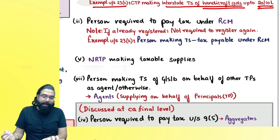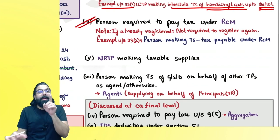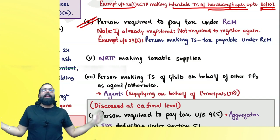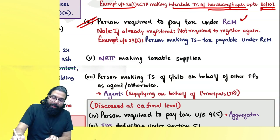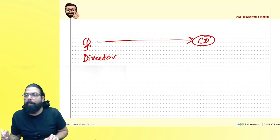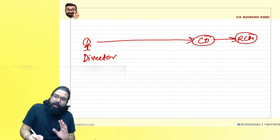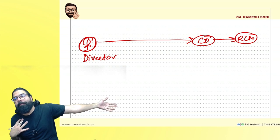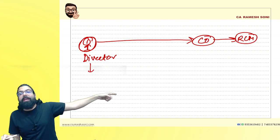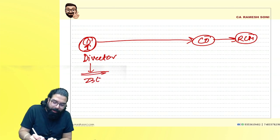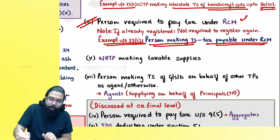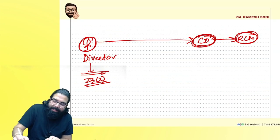If you are a person required to pay tax under RCM — section 9(3) — you are required to take compulsory registration. However, consider a director giving services to a company: the company pays GST under RCM, so the director never pays GST directly. The government, under section 23(2), exempted directors from registration because the tax is always payable under RCM by the company. The company, being already registered, will not take registration a second time.